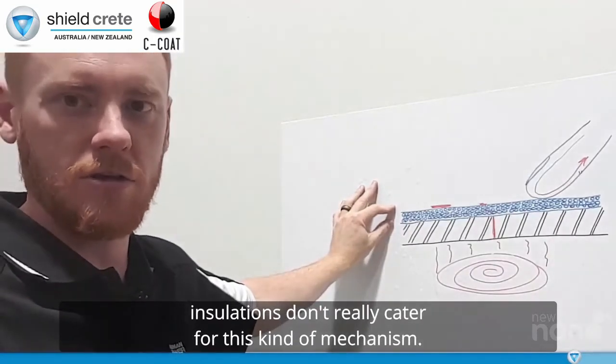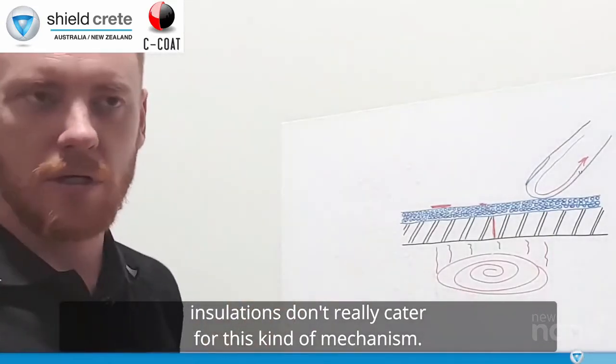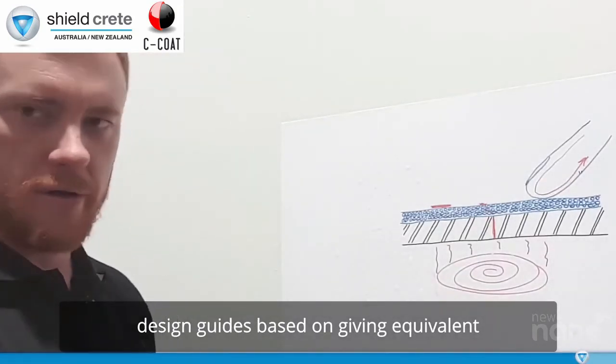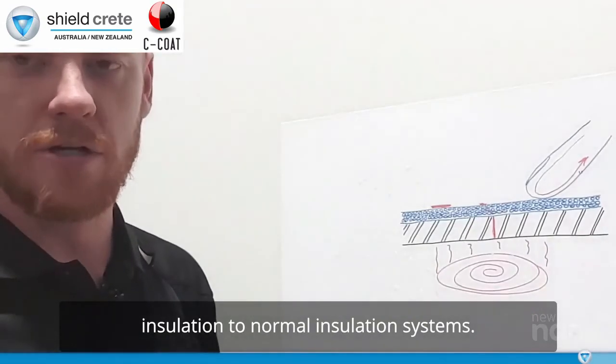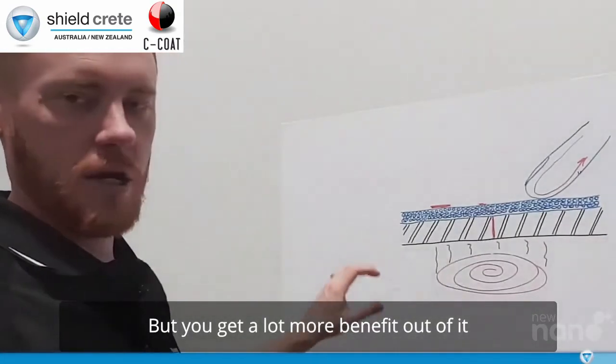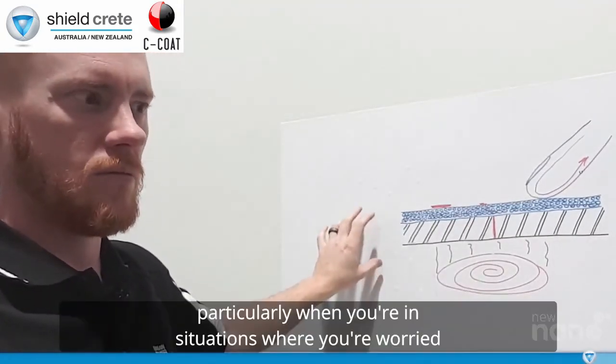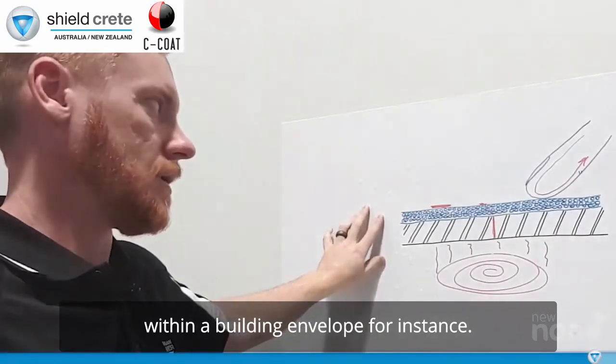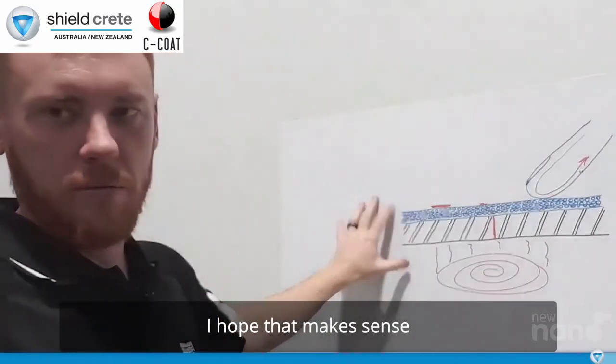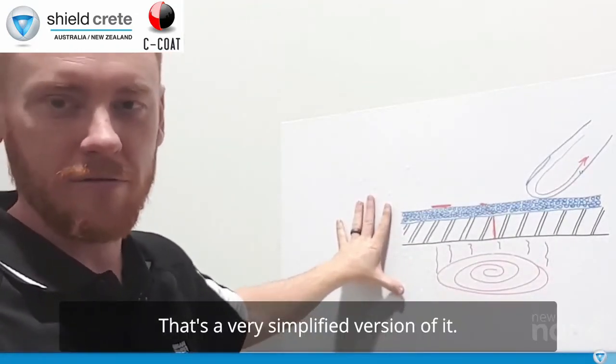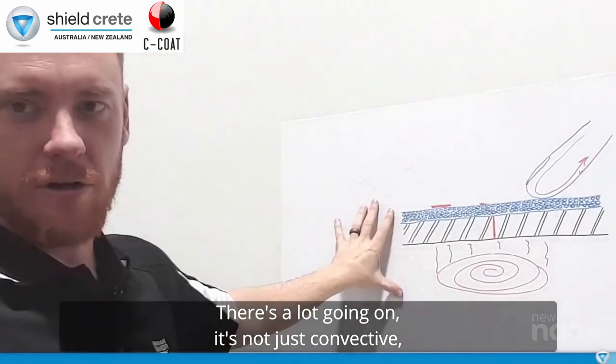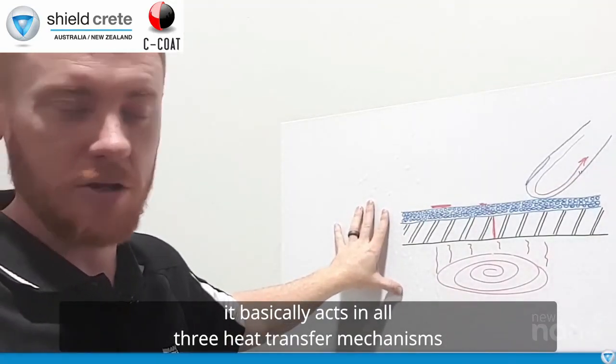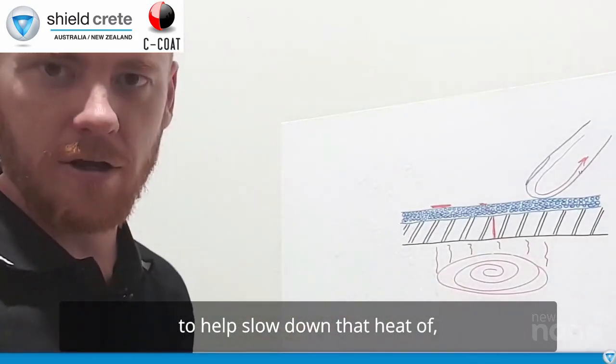They don't test comparatively with thick insulation systems. So the standards that are out there for those thick insulation don't really cater for this kind of mechanism. So we've come up with all our own design guides based on giving equivalent insulation to normal insulation systems. But you get a lot more benefit out of it, particularly when you're in situations where you're worried about corrosion under insulation or sweating within a building envelope, for instance, sweating of tanks, things like that. I hope that makes sense. That's a very simplified version of it. So there's a lot going on. It's not just convective. It basically acts in all three heat transfer mechanisms to help slow down that heat.